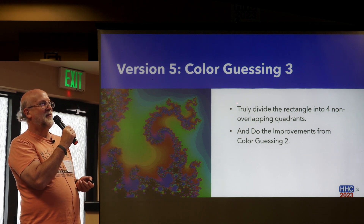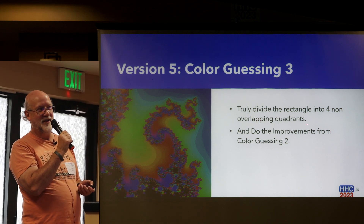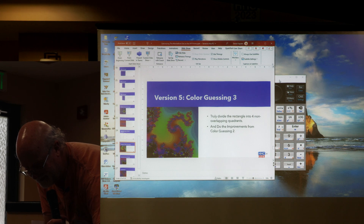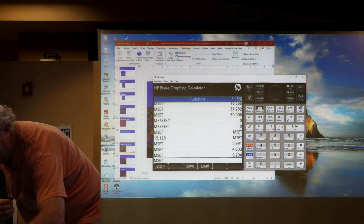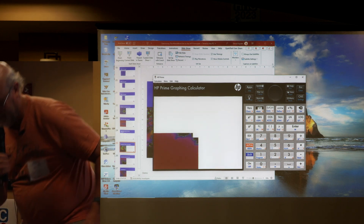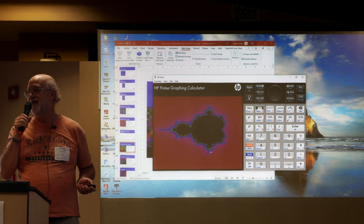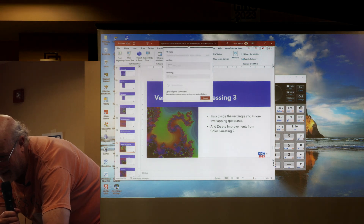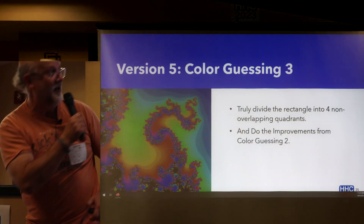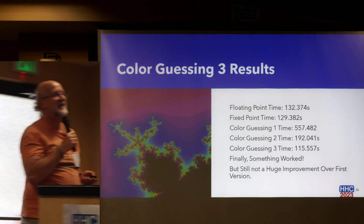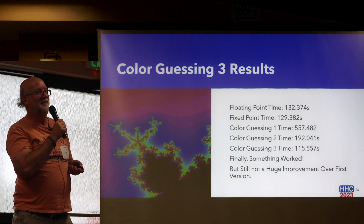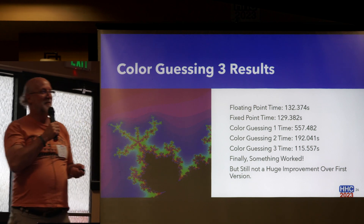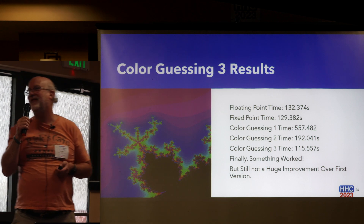So we come to color guessing three, where the idea is to truly divide the rectangle into four non-overlapping quadrants and incorporate all the improvements from the others. The timings: color guessing three came down to 115, going from 192 to 115. That's faster than the baseline floating point time, but really only a little bit. Something finally worked, but it's just not the improvement I was looking for.